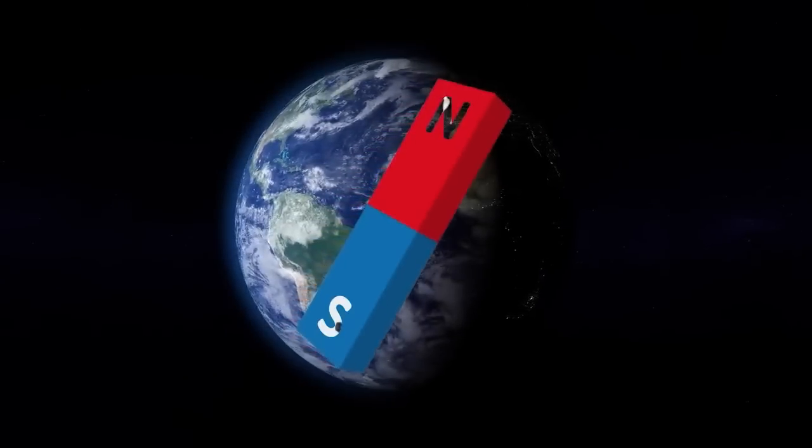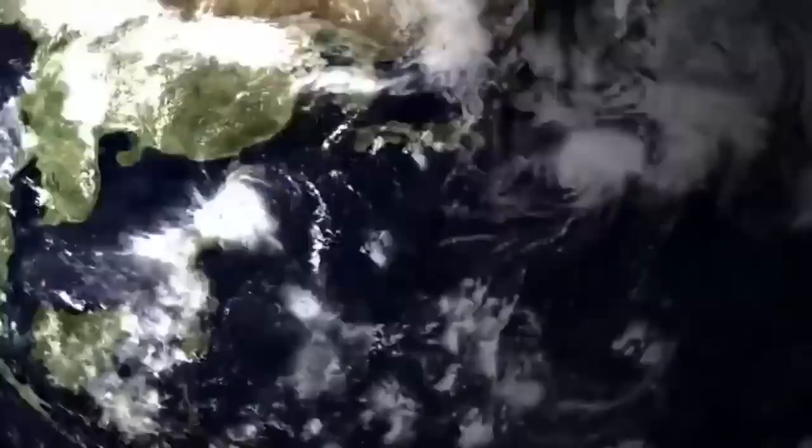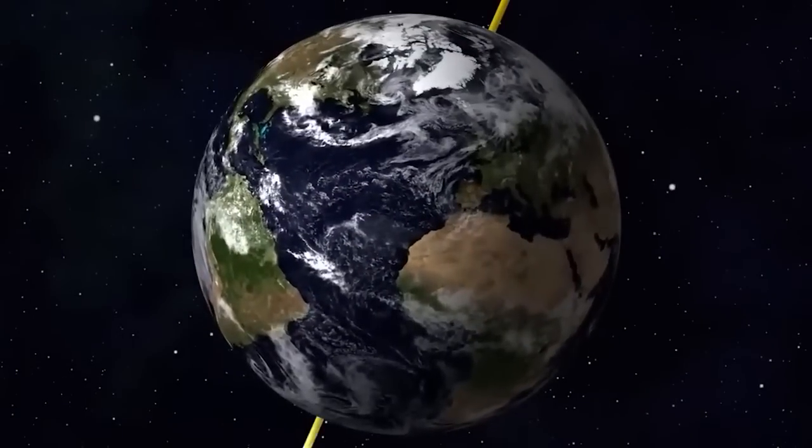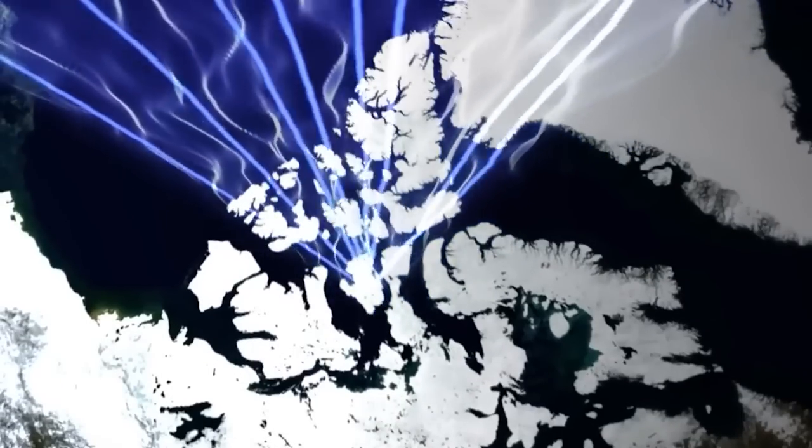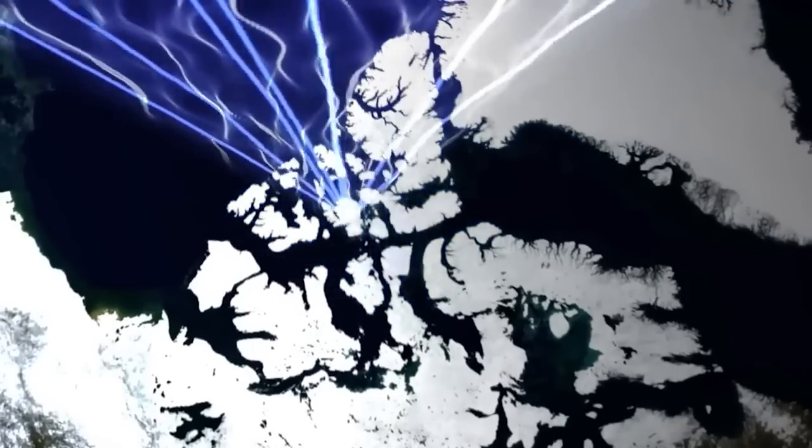Geomagnetic pulses like the one in 2016 might be caused by hydromagnetic waves that come from deep in the Earth's core, and the fast movement of the North magnetic pole could be linked to a high-speed jet of liquid iron under Canada.